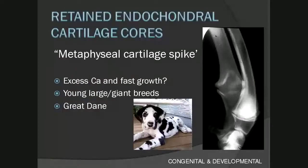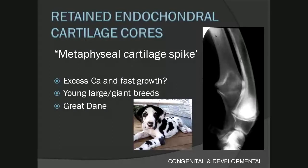The first condition we'll be looking at is retained endochondral cartilage cores. Retained means that the cartilage has been left behind when it shouldn't have. Endochondral cartilage refers to cartilage that should have undergone endochondral ossification, which is responsible for the longitudinal growth of bones. The core refers to the shape and location of the cartilage that has remained. Another word for this is metaphysial cartilage spike — a cartilage piece in the shape of a spike located in the metaphysis.